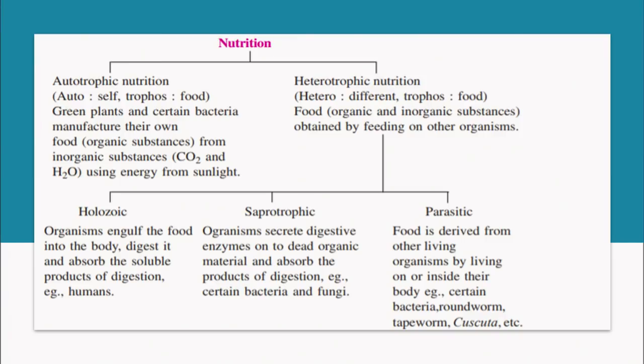The third mode of nutrition is parasitic. Parasitic organisms depend on other organisms for their food and ultimately harm them. The food is derived from other living organisms on or inside their body — like the roundworm, tapeworm, and in plants it is the cuscuta.